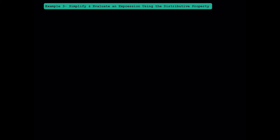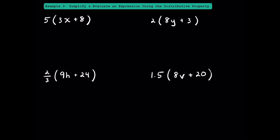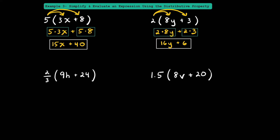Now let's practice simplifying algebraic expressions using the distributive property. For 5 times the quantity 3x plus 8, we distribute the 5 to the 3x to get 5 times 3x, then distribute the 5 to the 8 to get plus 5 times 8. That gives us 15x plus 40. For 2 times the quantity 8y plus 3, distributing gives us 2 times 8y plus 2 times 3, which simplifies to 16y plus 6.